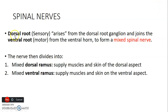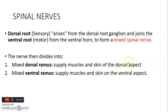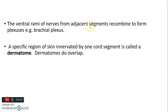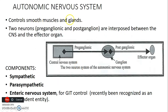Spinal nerves arise from the dorsal root, which is sensory from the dorsal horn, and the ventral root, which is motor from the ventral horn. They join together to form a spinal nerve that is both motor and sensory. This spinal nerve divides into a dorsal ramus to supply muscle and skin on the dorsal aspects, and a ventral ramus — also mixed motor and sensory — to supply structures on the ventral aspect. Ventral rami from adjacent segments combine to form the brachial plexus. A dermatome is a specific skin region innervated by a single spinal segment, and dermatomes may overlap.